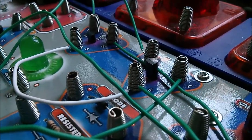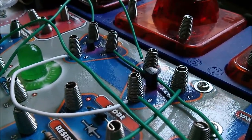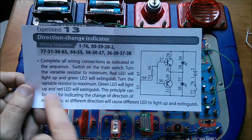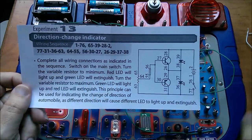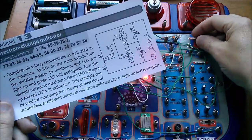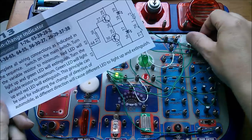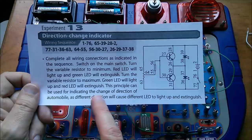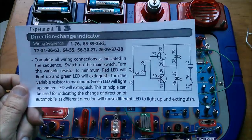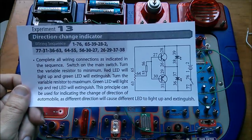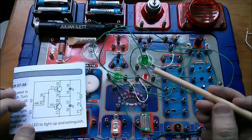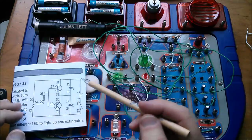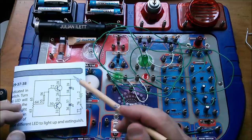The NPN at the far side there is a much smaller little thing. This description here is just gibberish really. It just says wire it all up, turn the pot to the left, the red LED will light up, turn the pot to the right and the green LED will light up. And then it says this principle can be used for indicating the change of direction of automobile. Well it can't really, it doesn't flash.